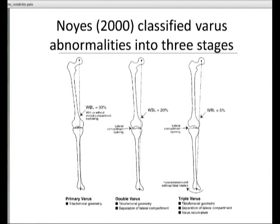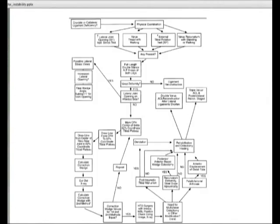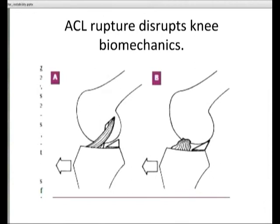The question is: can osteotomy aid biomechanics in an ACL-deficient knee? These are some examples of changing the posterior slope to try to address that.